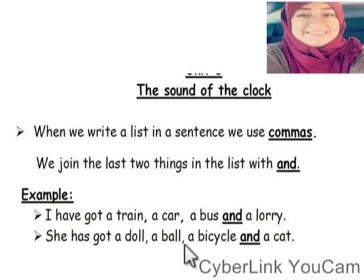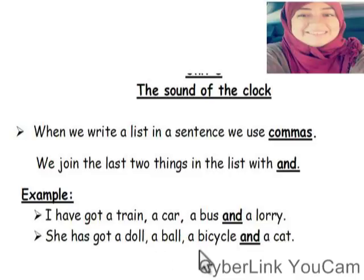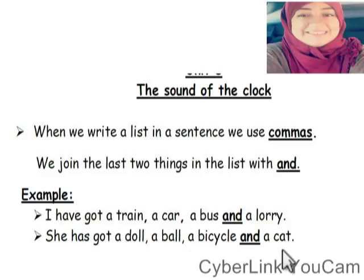هنا فصلت بين كل item والتاني حطيت commas، وجيت الاخر خالص قبل a lorry حطيت 'and' عشان عملت conjunction — ربط. Okay join: She has got a doll, a ball, a bicycle, and a cat. عملت كما كما وقيت في الاخر خالص عملت join بـ 'and'. It's very easy.